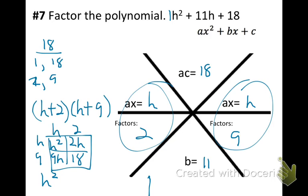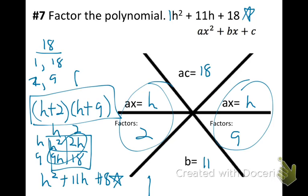So written out, that is h squared plus 11h plus 18. And notice, that is the polynomial that we started with. So we broke it into its factors. What you can multiply together, that will give you that polynomial.